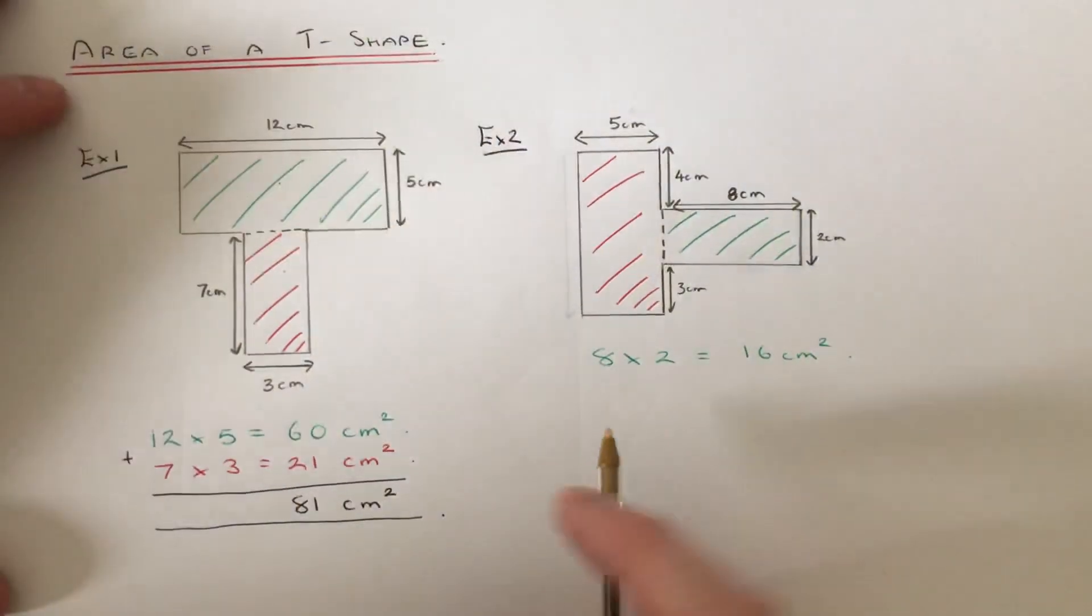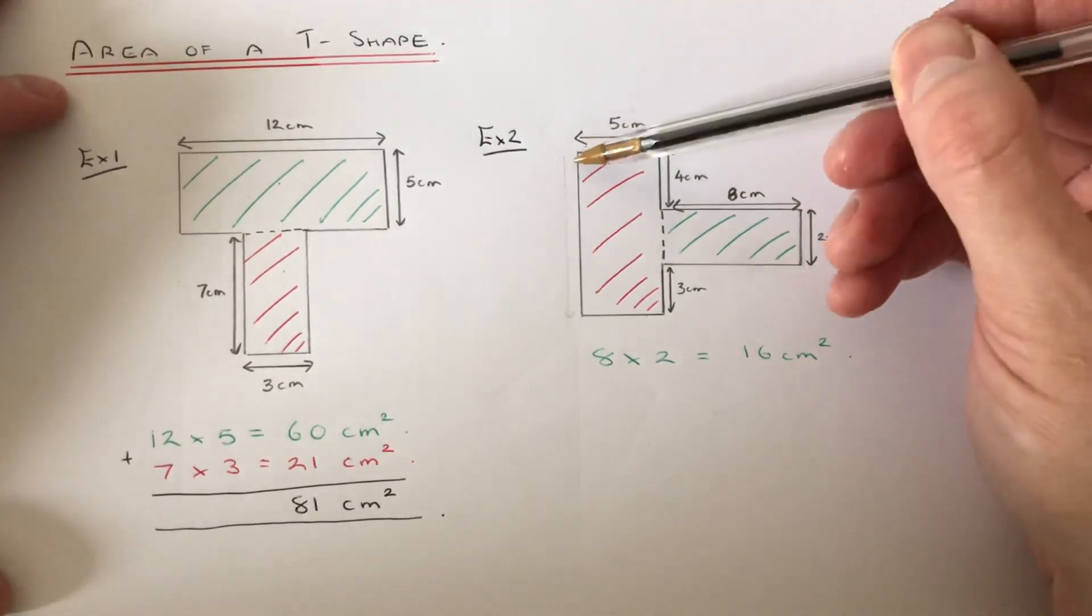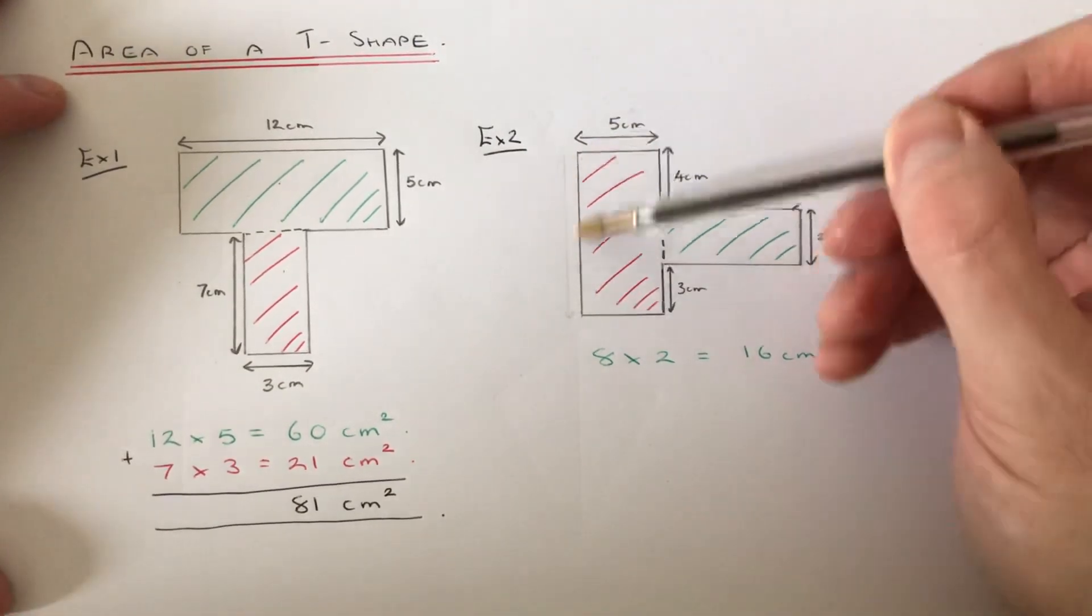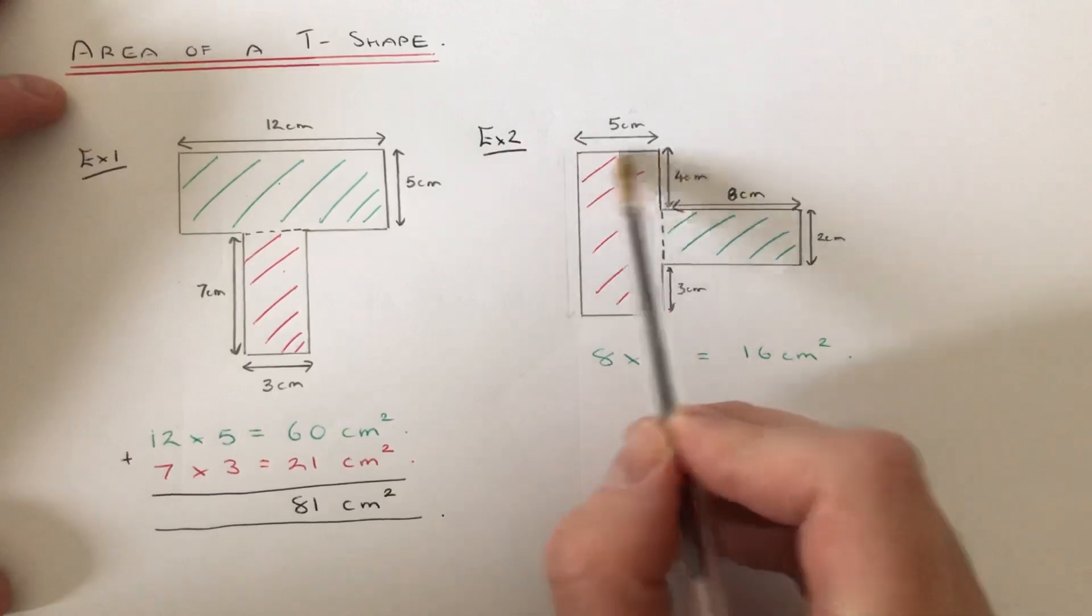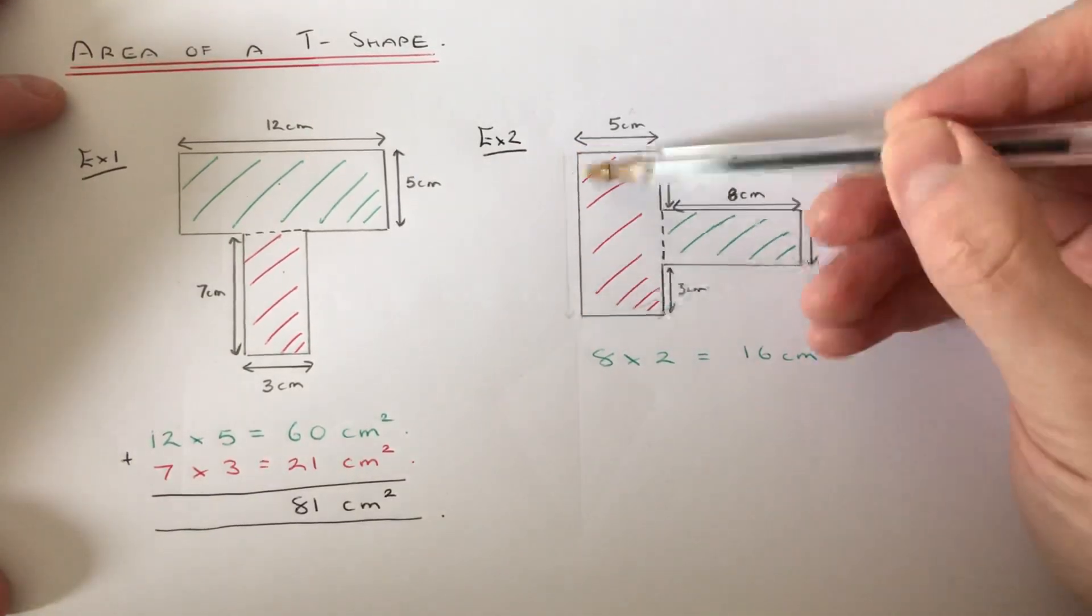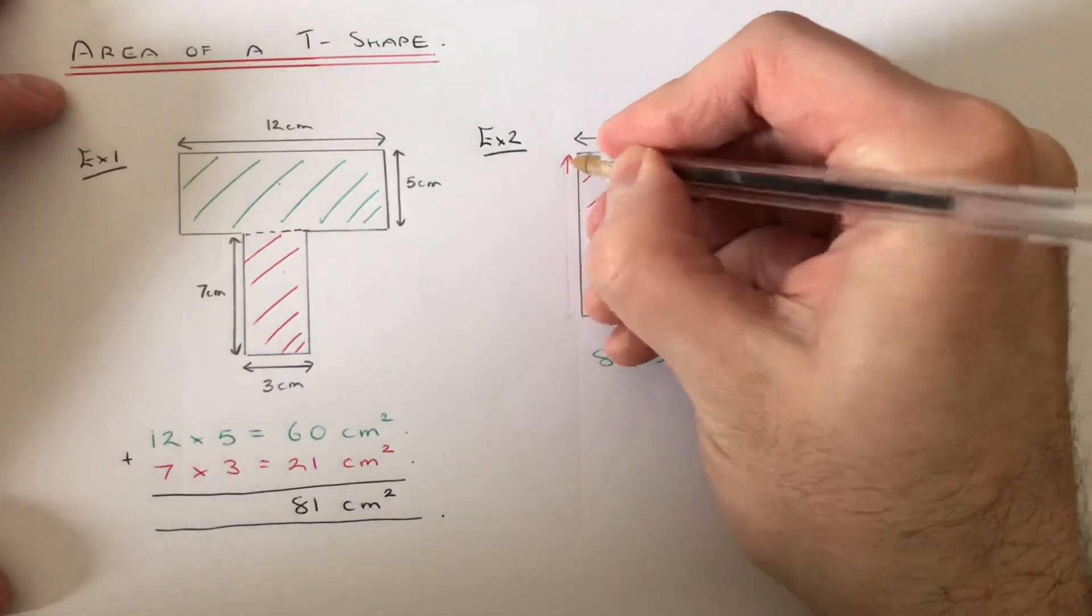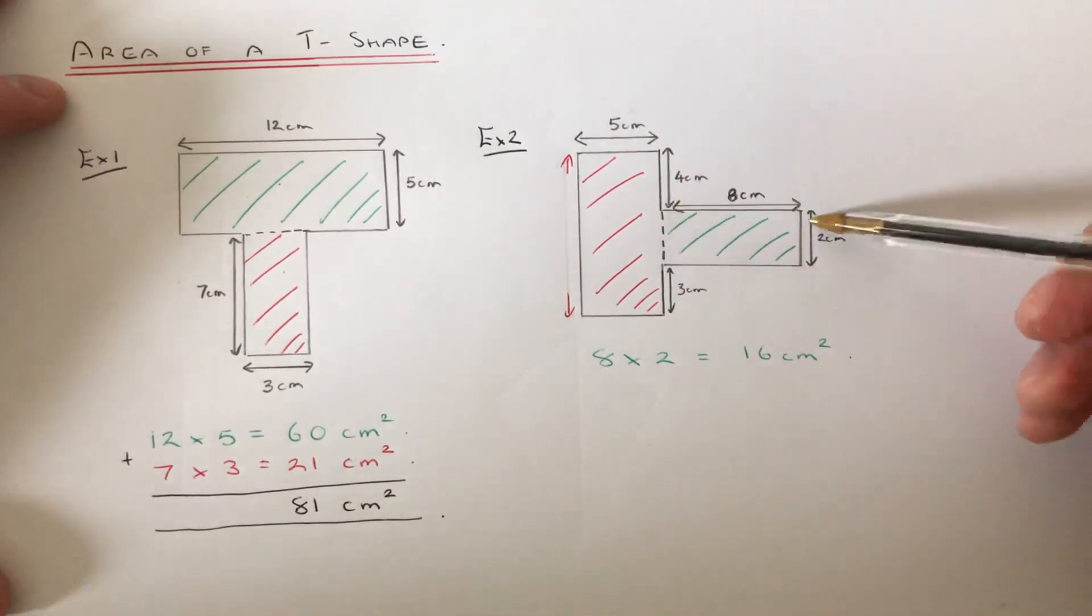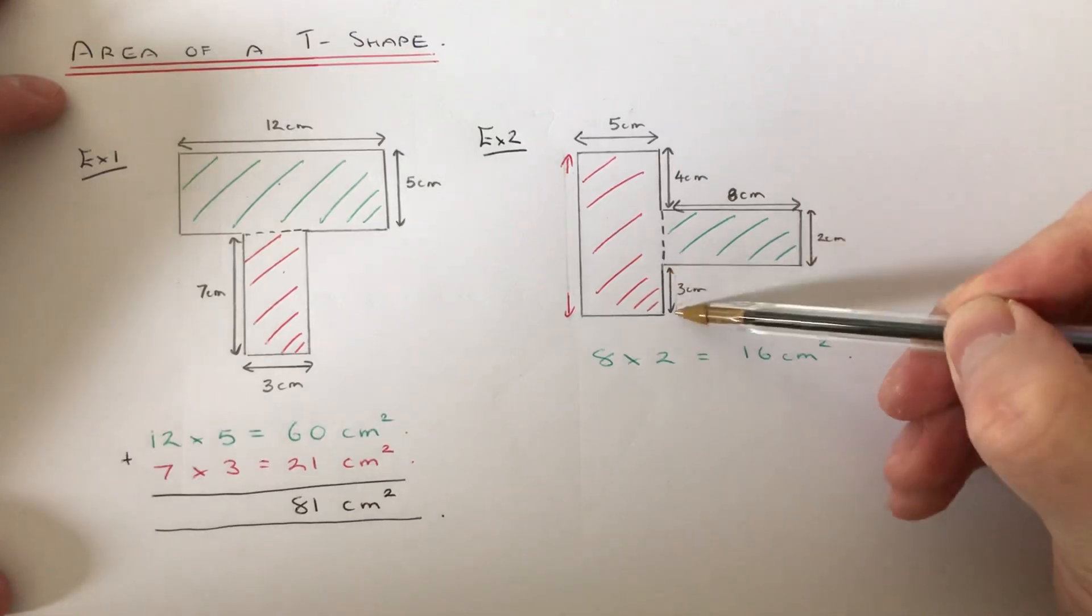So the red one's a little bit trickier to do because I haven't got the length of the red rectangle. I only have the width. But we can find the length of that side there if we add up all the vertical lengths up here.